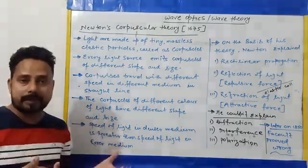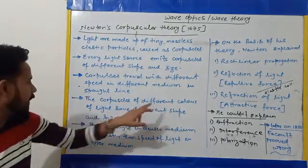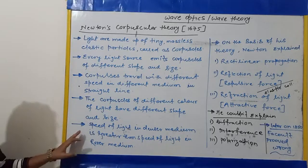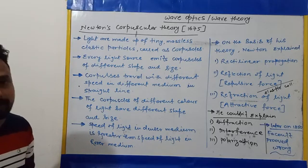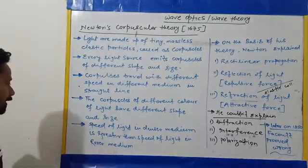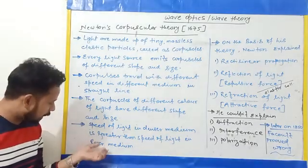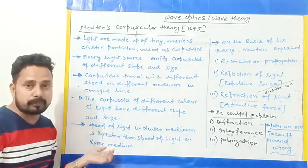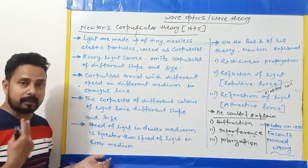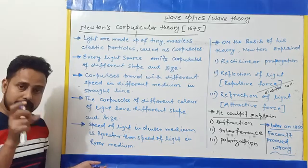The biggest drawback of Newton's Corpuscular Theory was the claim about the speed of light in a denser medium. This was experimentally proved wrong after about 200 years. Around 1850, a scientist named Foucault conducted an experiment that showed this claim to be incorrect.